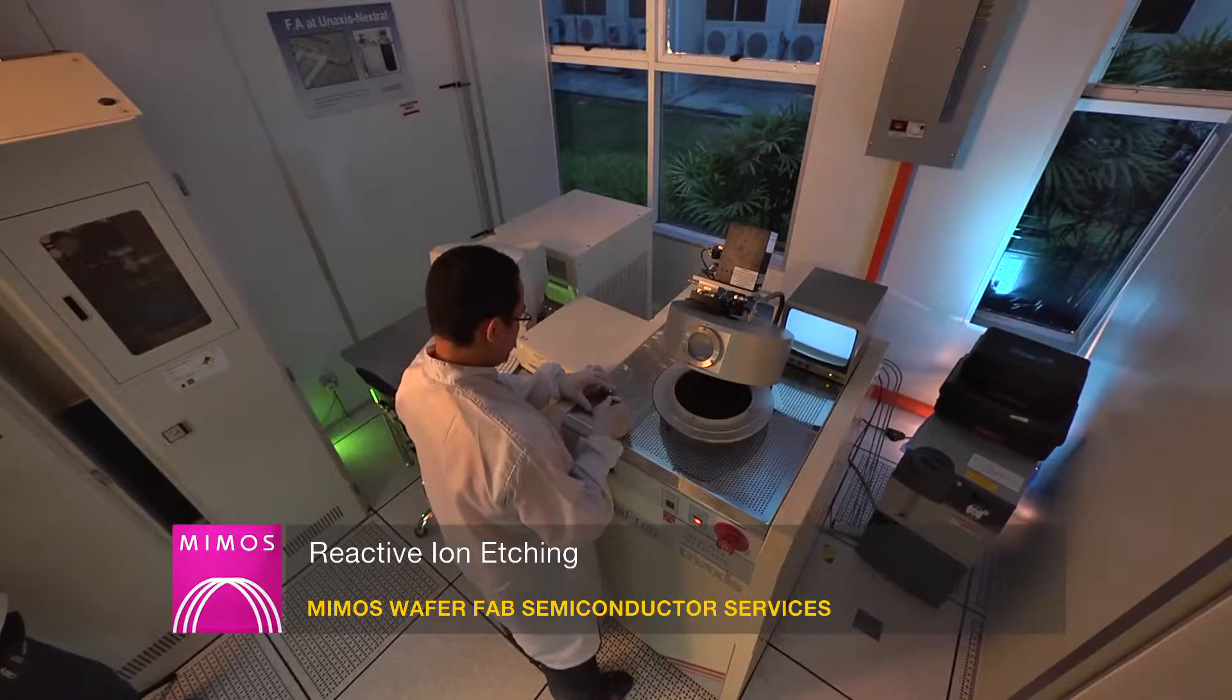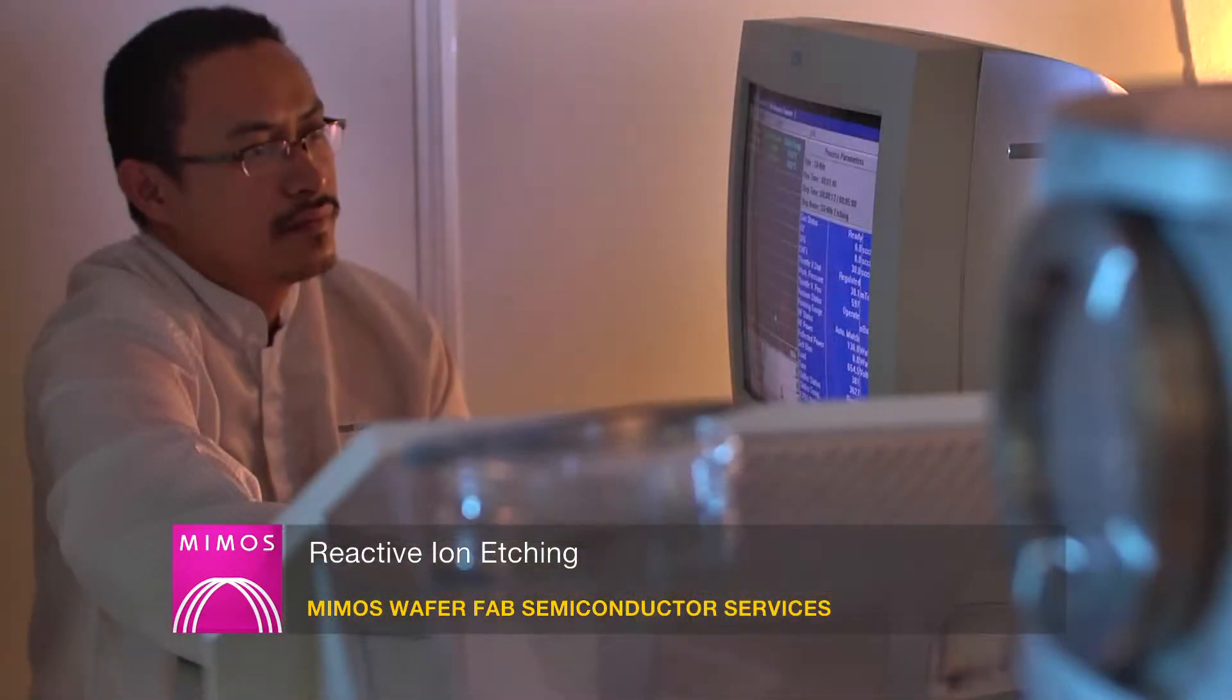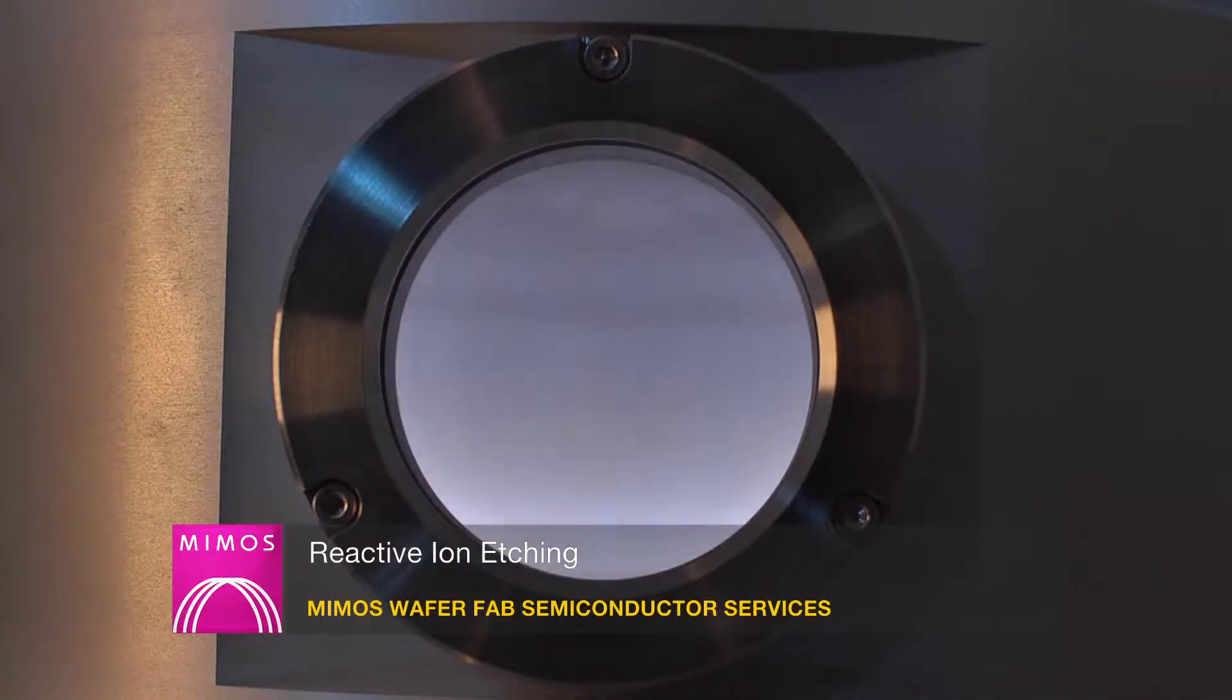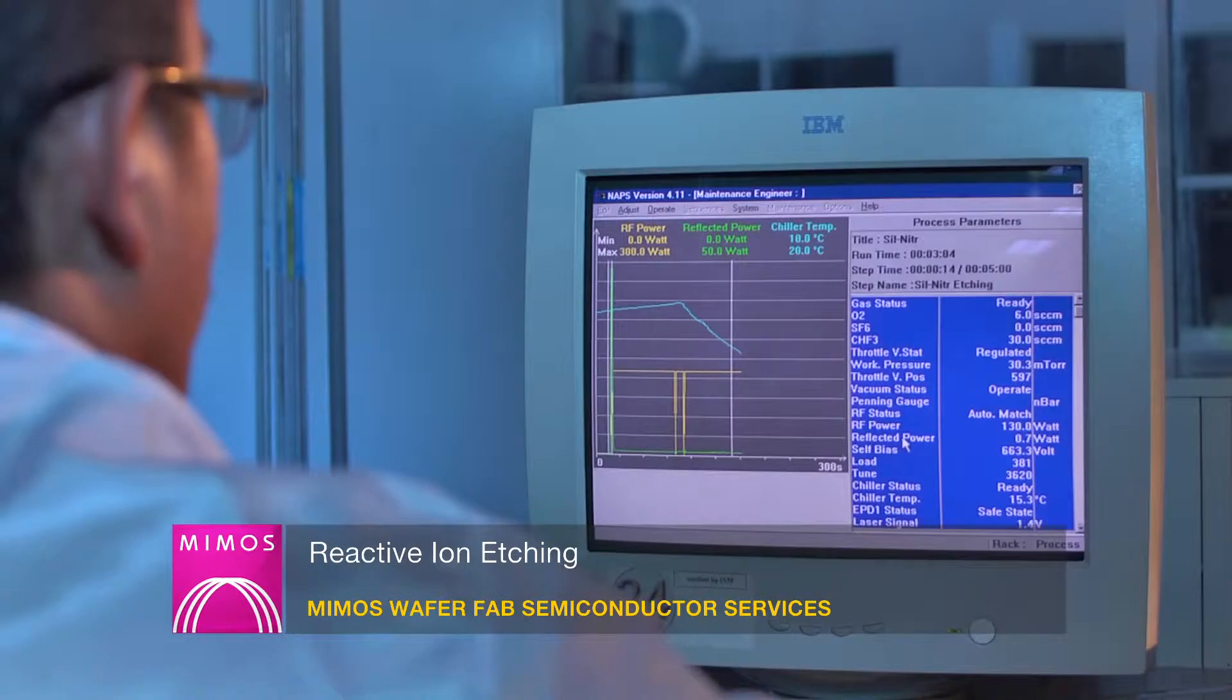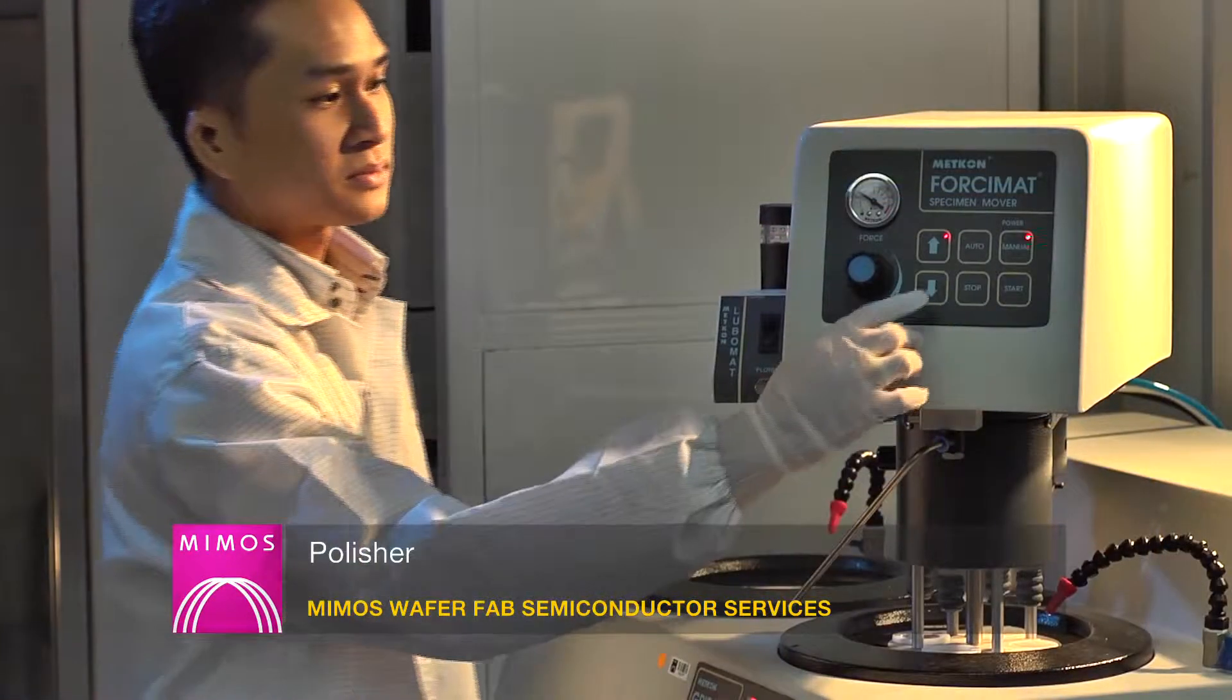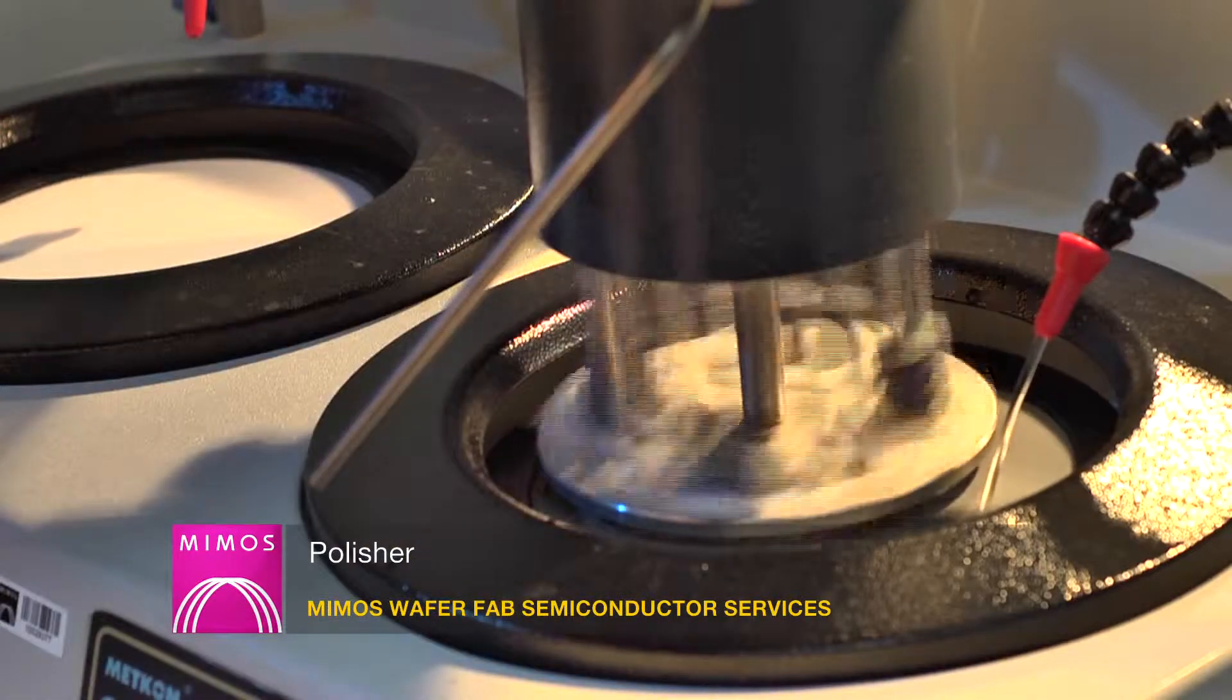Reactive ion etching is used to etch dielectric materials for IC stripping or delayering. It can guarantee a clean etch process with full electrical functionality up to three metal layers. Polisher is used to reveal cross-section of the device through mechanical polishing.